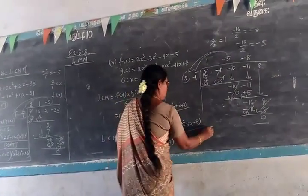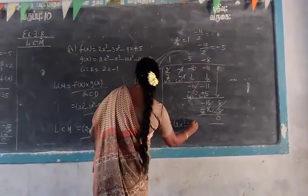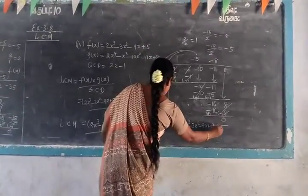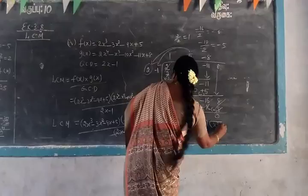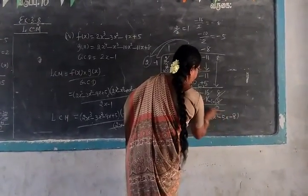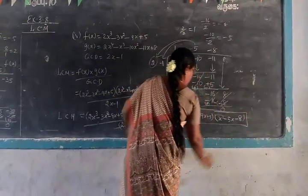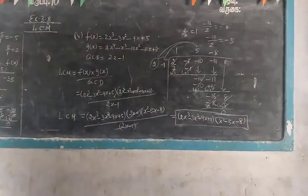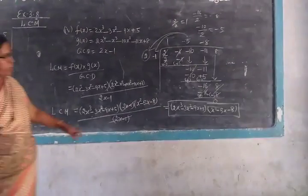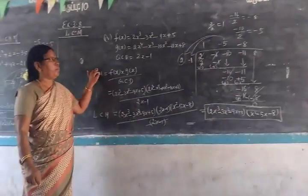Therefore, LCM equals — write things together. 2X squared. The final step: 2X squared minus 3X squared minus 9X plus 5, bracket, X, 5X minus 5X minus 8. So we explain whether this is answering right or wrong. X squared minus 2X squared, minus 3X squared. So it is 5X squared. So this comes under 5X.